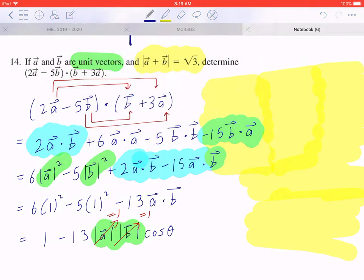So from the given, it's telling you that the magnitude of a plus b is going to be root 3. And the fact that the vectors a and b are both 1 in terms of magnitude, this means you can draw a diagram.